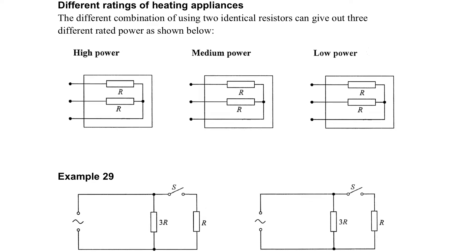We can also use different connections to set the rating of heating appliances. For example, a hair blower. If we connect in this way, then we have lower resistance. Because they are in parallel, we have the lowest resistance.